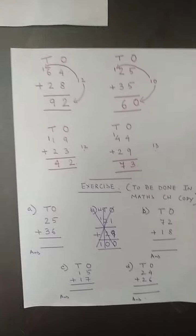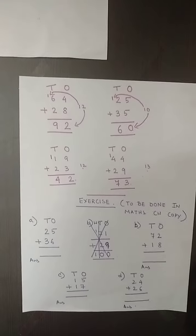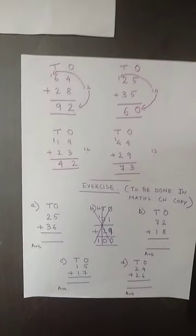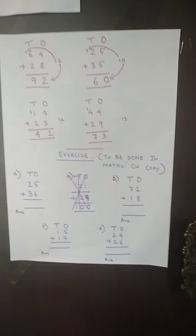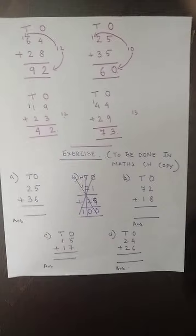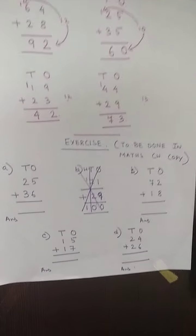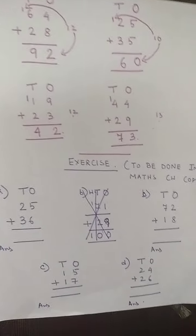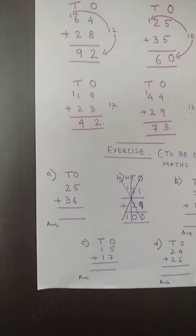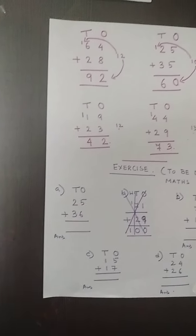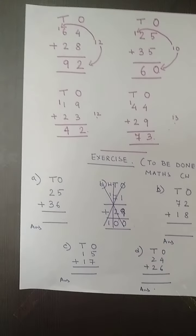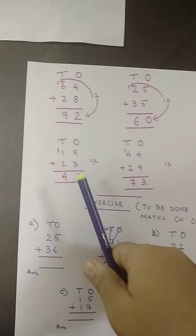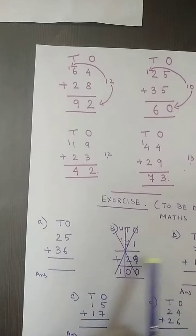I know this is a little bit tough, so you have to understand it first and then practice. I have given you only 4 sums for practicing so it will be easier to understand. These 4 sums are A, B, C, D — later in the next video I will give more and more practice work. But today you will be doing only 4 sums in your math CW copy. Take out a new page and write the heading: Addition Carrying.